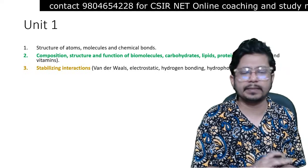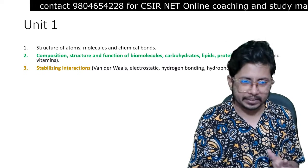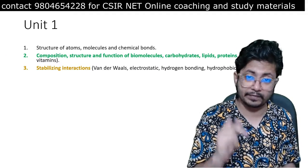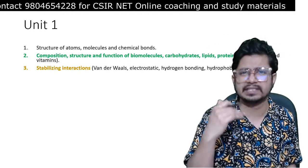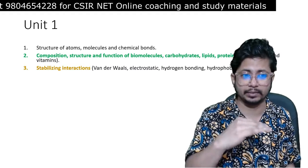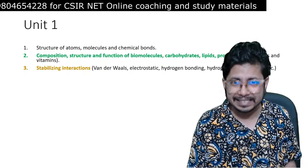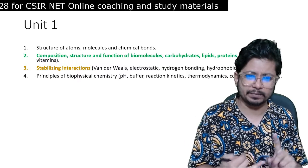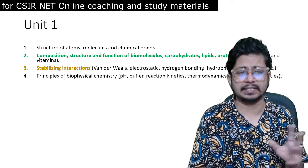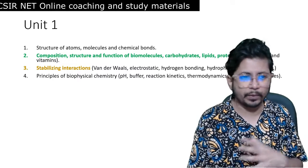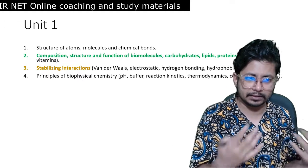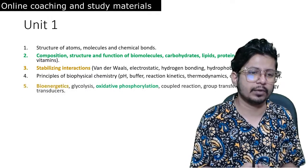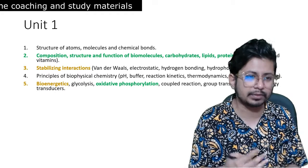The next topic is stabilizing interactions: van der Waals, electrostatic, and hydrogen bonds — all kinds of bonds that are present. These are important but slightly lesser so, denoted with yellow color code. Principles of biophysical chemistry — pH, buffers, and related topics — are not as important as the other two discussed, so they have no color coding.